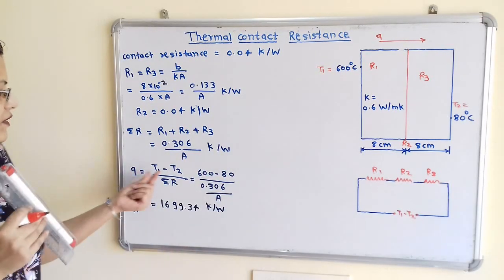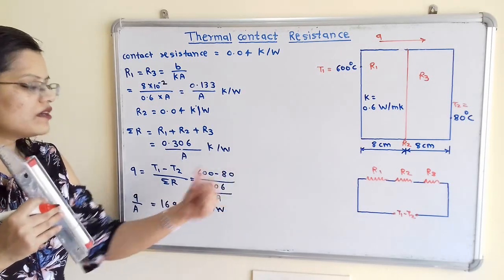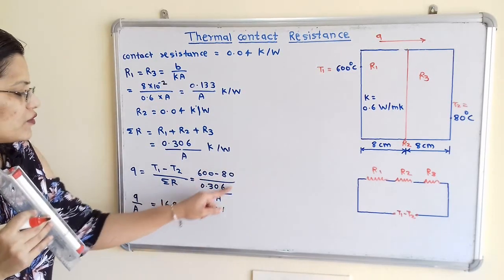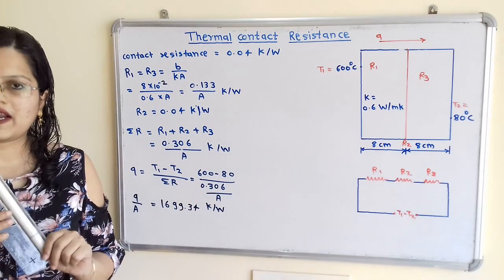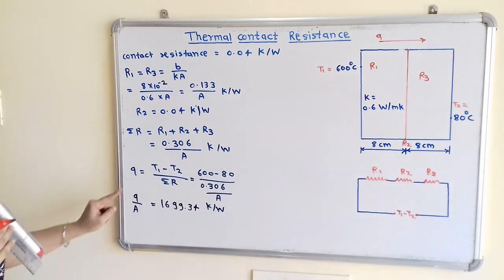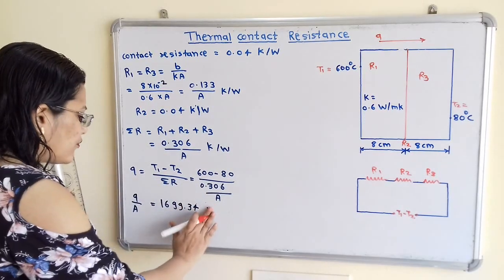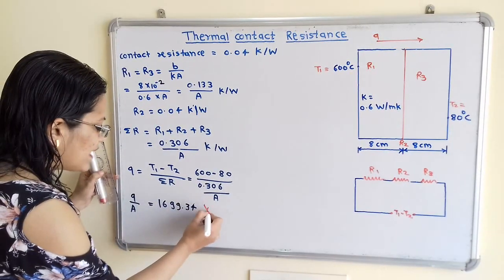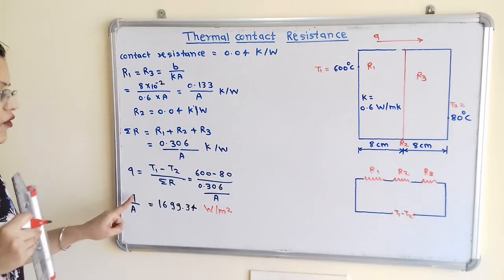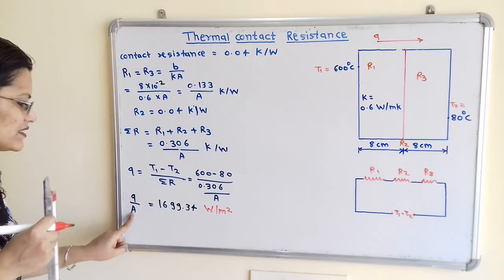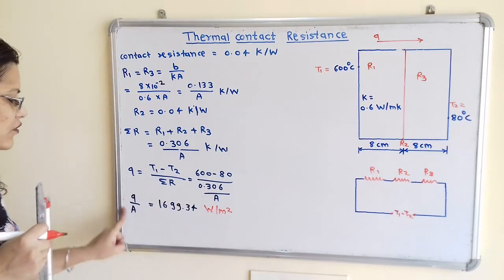Q equals (T1 minus T2) divided by the total resistance. Moving A to the numerator, we get 1699.34 Kelvin per Watt. Shifting A to the left-hand side gives us Q/A, which is the heat flux with units of Watt per meter square — because Q has units of Watt and A has units of meter square. So Q/A = 1699.34 Watt per meter square is the answer to the first part.